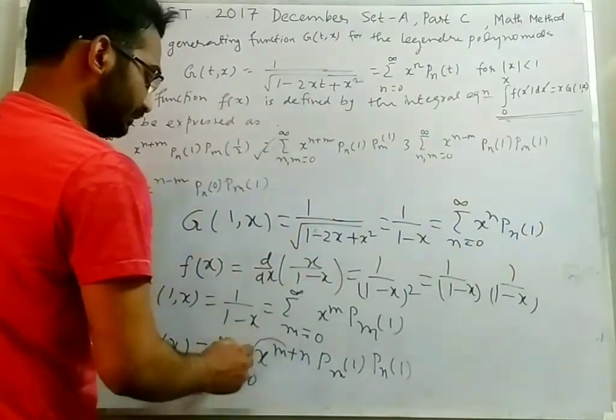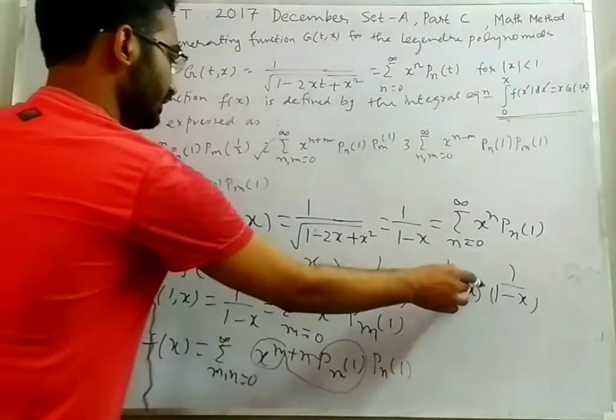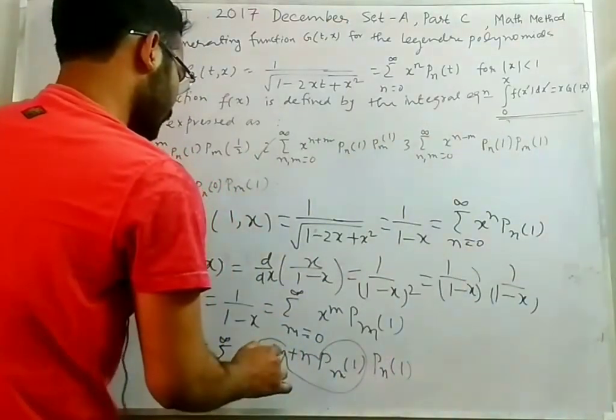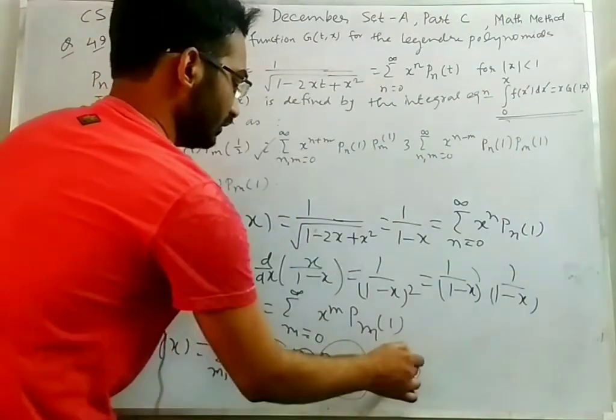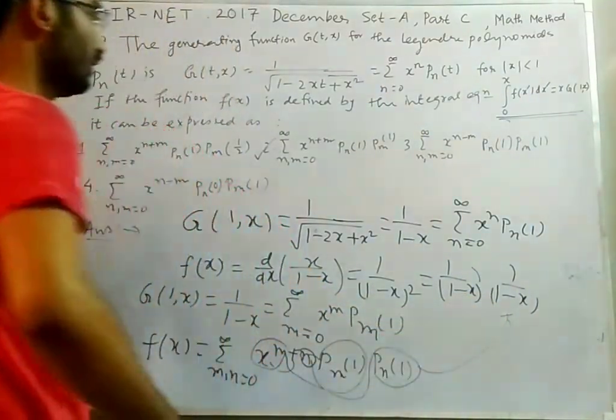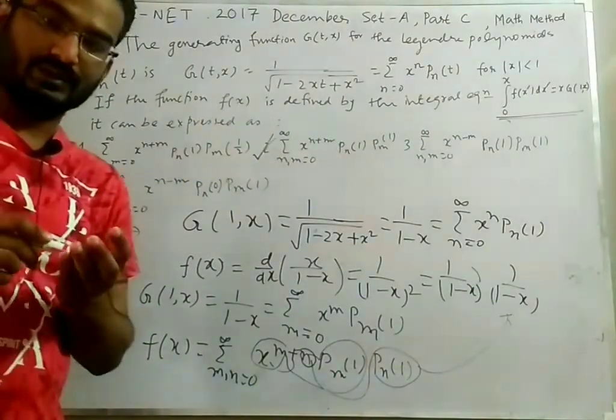If we consider this part along with this, this is 1 by 1 minus x into this part, into this part corresponds to another one. This is the correct option. Thanks for watching.